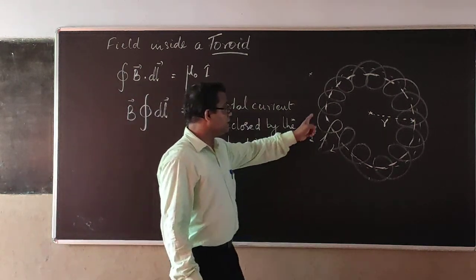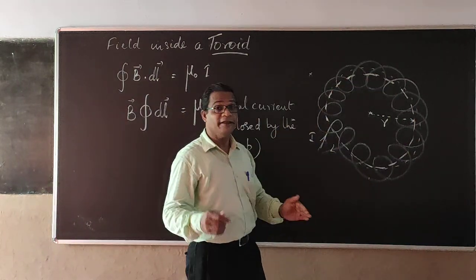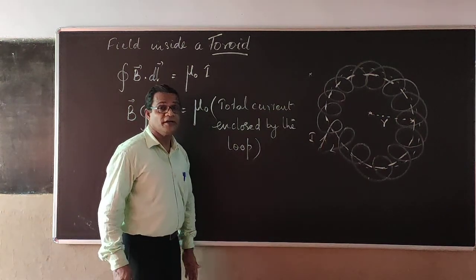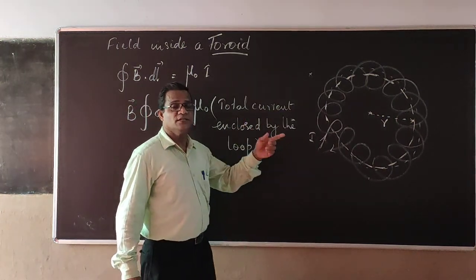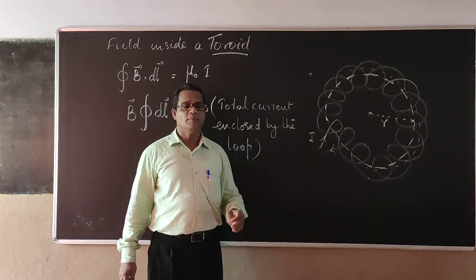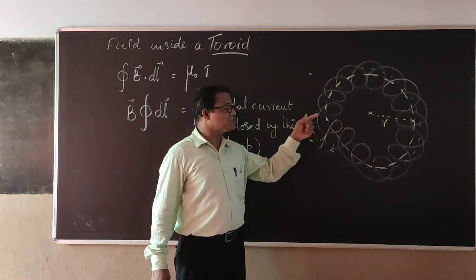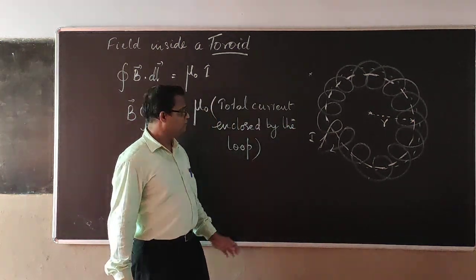So total current enclosed by the loop - there are n number of turns there. And in each turn there will be current present.